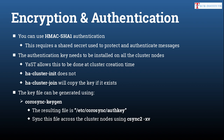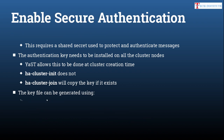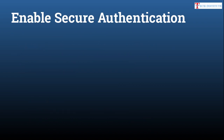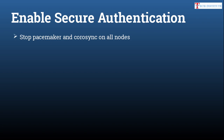Now, how do you enable secure authentication? You already know that with corosync-keygen you can generate the key, but how do you implement that key? First, you have to stop pacemaker and corosync on all the nodes. Run the command: systemctl stop pacemaker corosync.